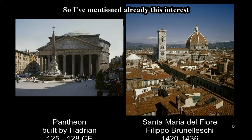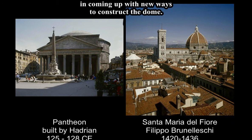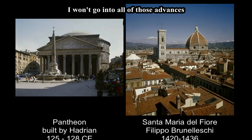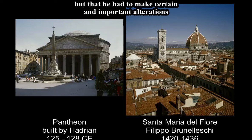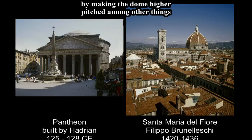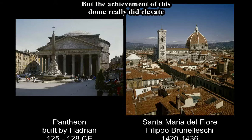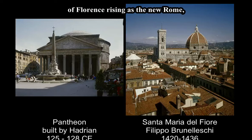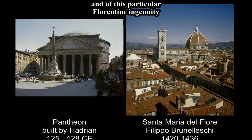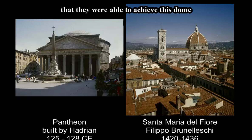This interest in ancient Roman architecture and Brunelleschi's great achievement in coming up with new ways to construct a dome — you can see that the Pantheon really was the model for Brunelleschi, but he had to make certain important alterations, like making the dome higher-pitched, so that it could stay intact. The achievement of this dome really did elevate, certainly in the minds of the Florentines, that concept of Florence rising as the new Rome and of Florentine ingenuity in achieving this dome when no one else could.